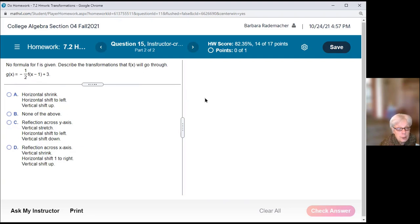Horizontal shrink? A is out. B, I'm not ready to settle for none of the above. C, a reflection across the y axis? No. D, a reflection across the x axis? Yes. A vertical shrink? Yes. A horizontal shift 1 to the right? Yes. And a vertical shift up? Yes. Our answer is D.